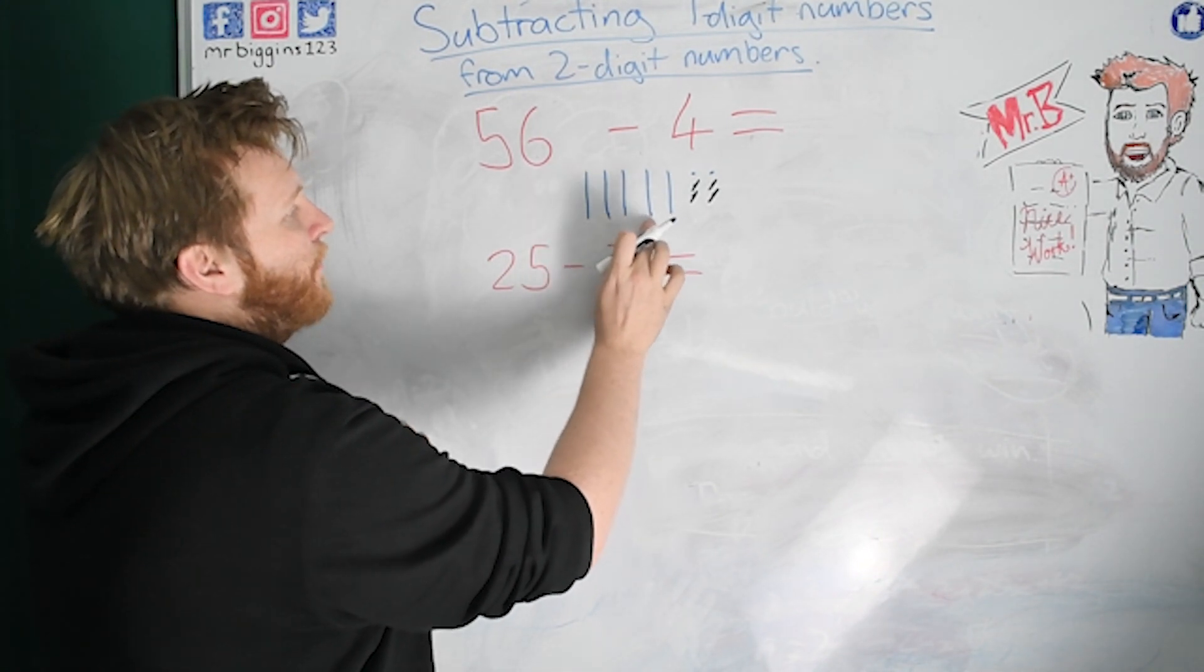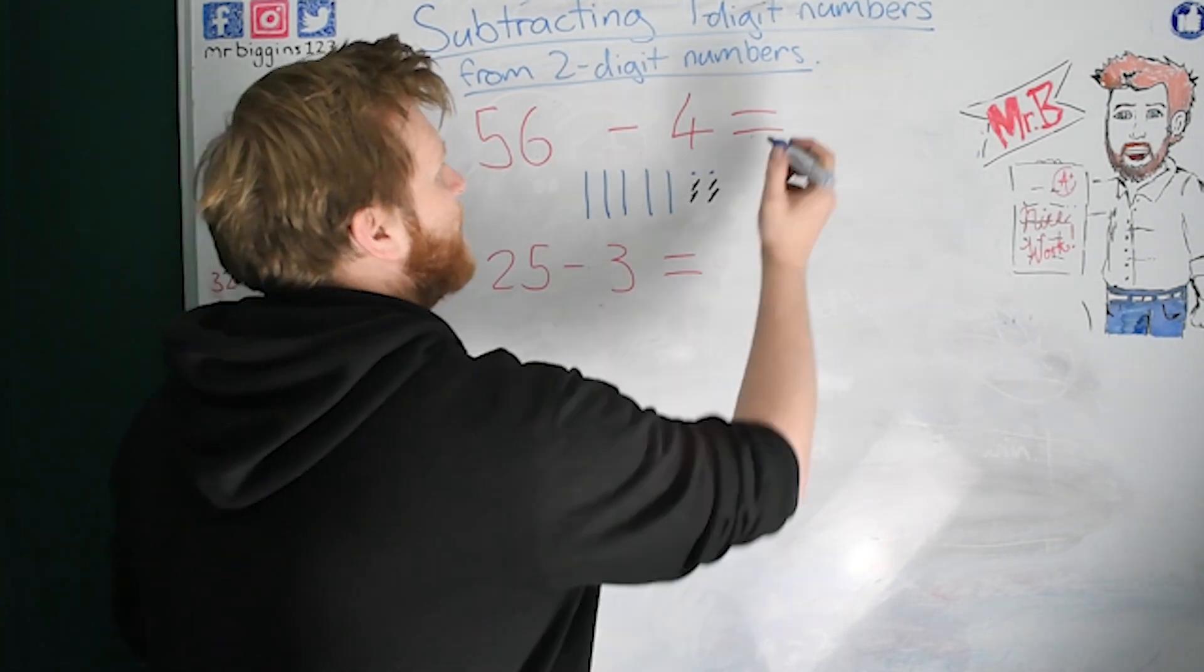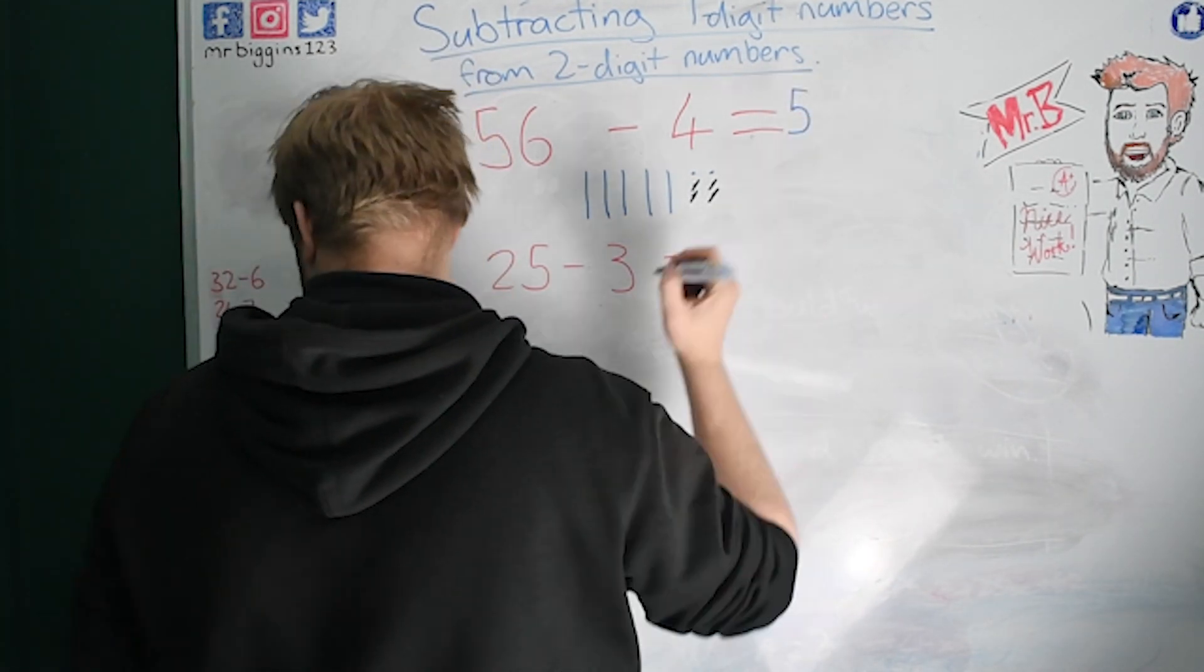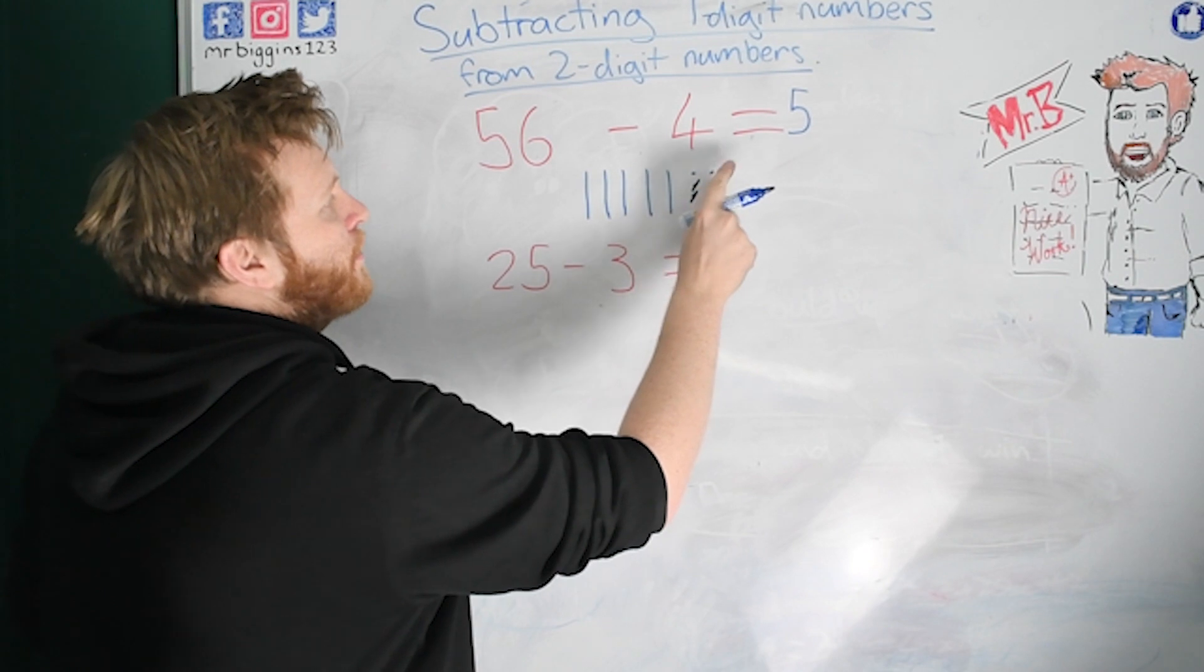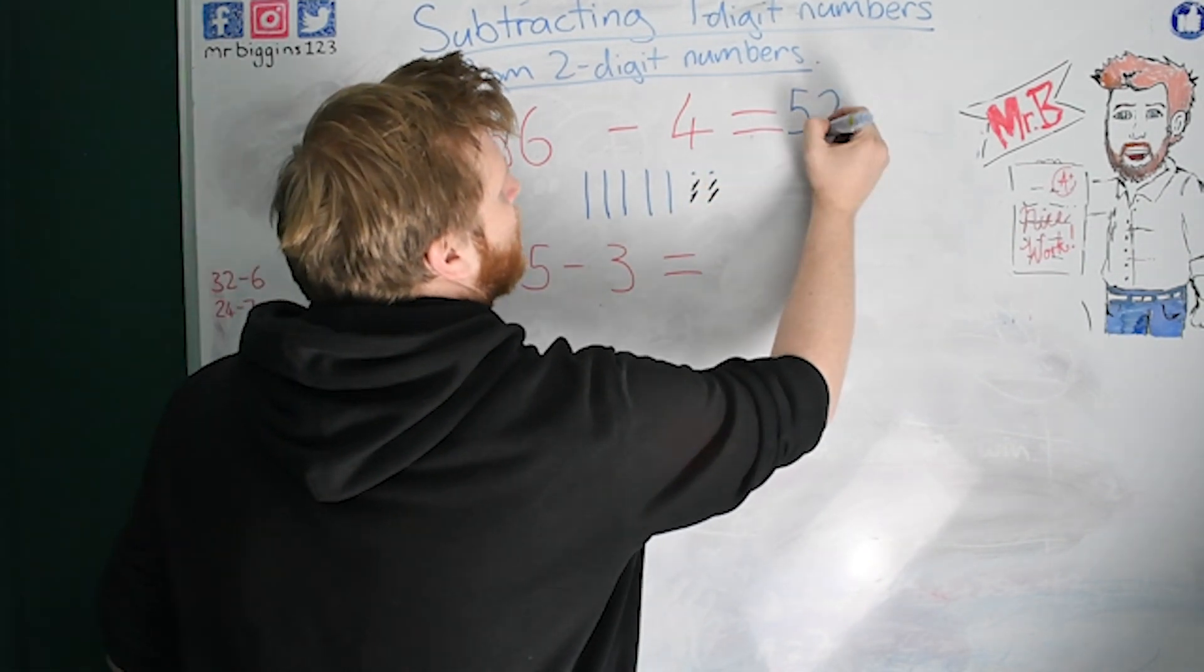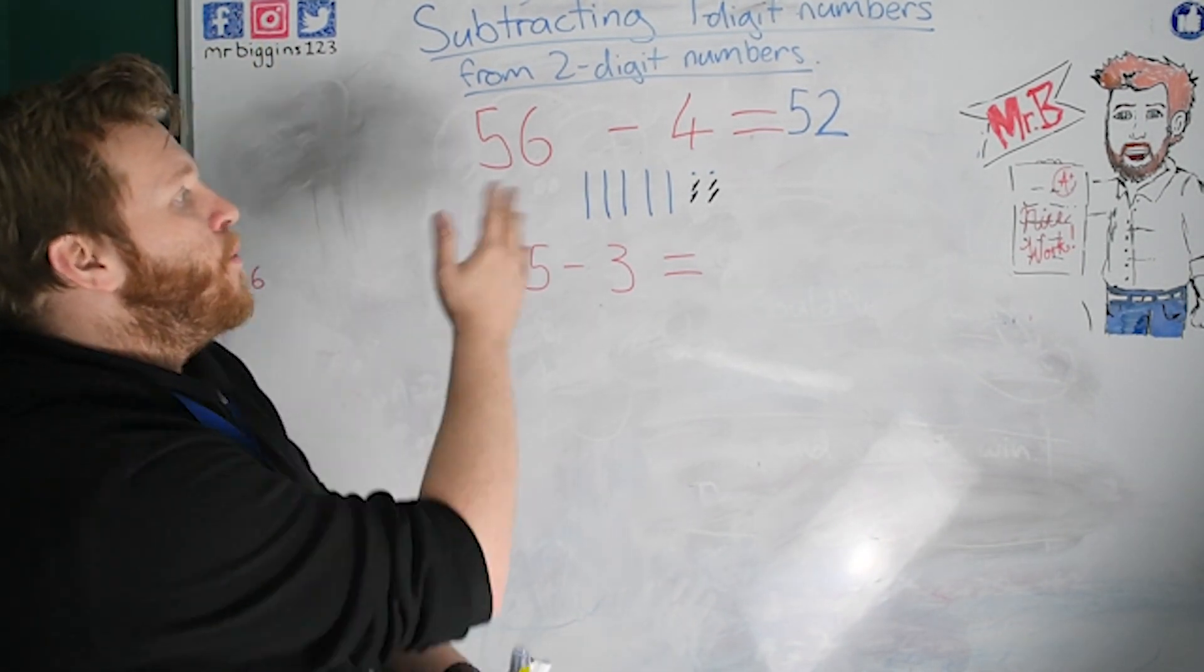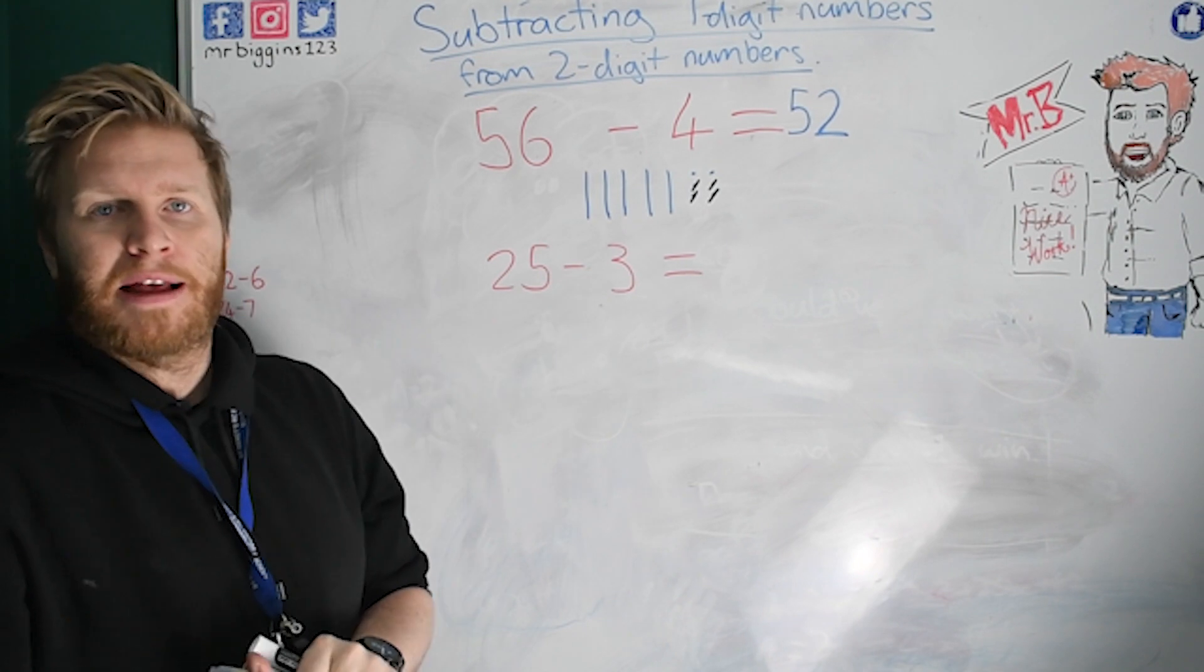Now I can count my tens and ones to find my answer. One, two, three, four, five. I have five tens. I put five in my tens column. And I have one, two, two in my ones column. So I've got two. Now, when we look at that sum, we can do it like that.